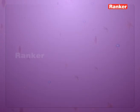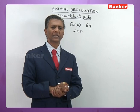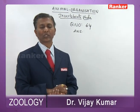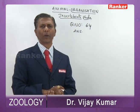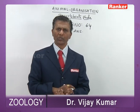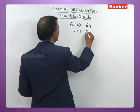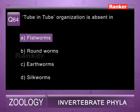Question sixty-four: tube-in-tube organization is absent in — a) flatworms, b) roundworms, c) earthworms, d) silkworms. Tube-in-tube organization is absent in flatworms. Roundworms are pseudocoelomate, earthworms and silkworms are true coelomates and all have tube-in-tube organization. So sixty-fourth question correct answer is a) flatworms.